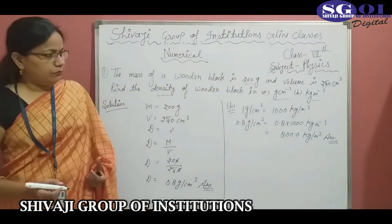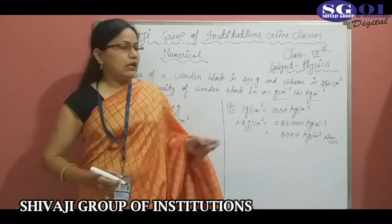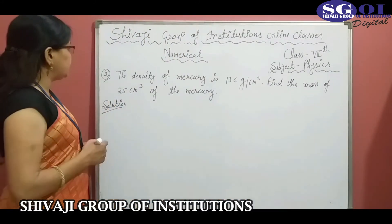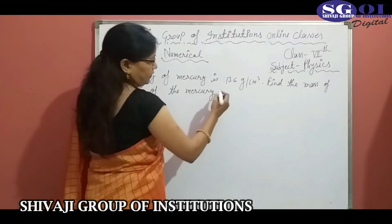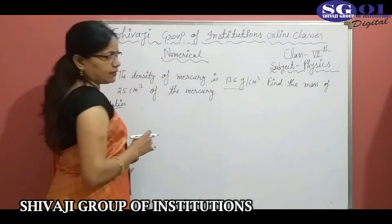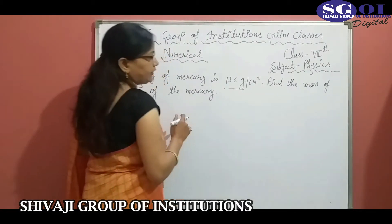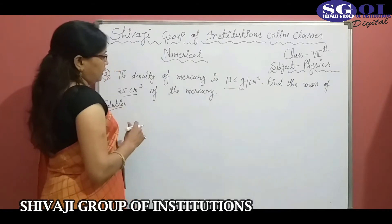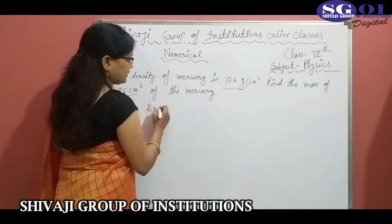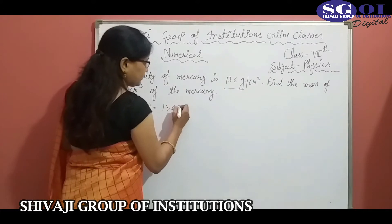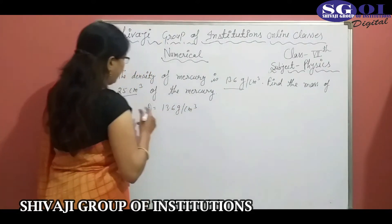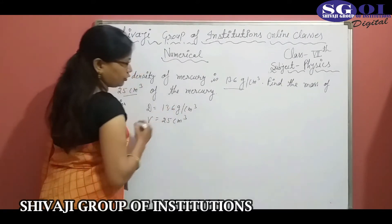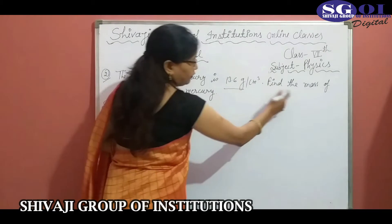So the density of the wooden block in kilogram per meter cube is 800. Numerical number 2: the density of mercury is 13.6 gram per cm³. Find the mass of 25 cm³ of mercury. In this question, density is 13.6 gram per cm³ and volume is 25 cm³, and we have to find out mass.